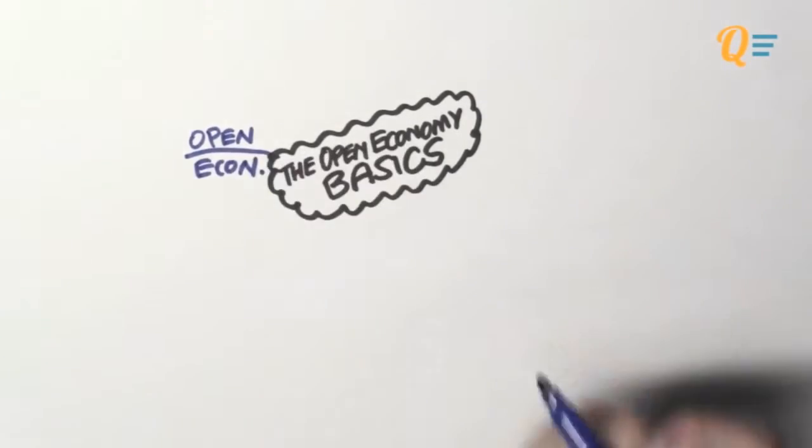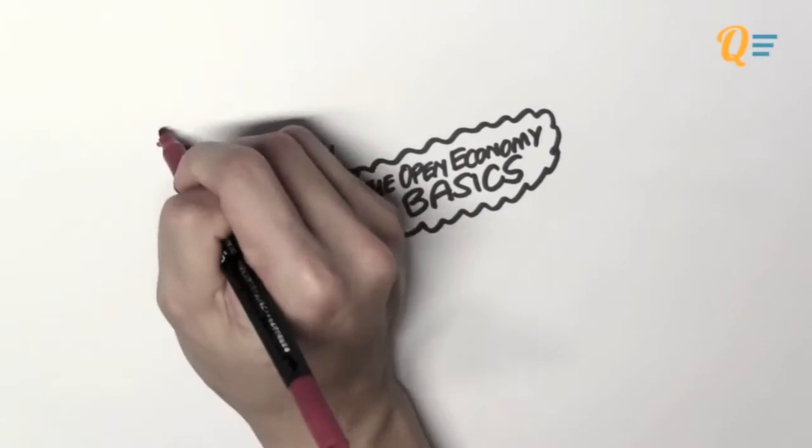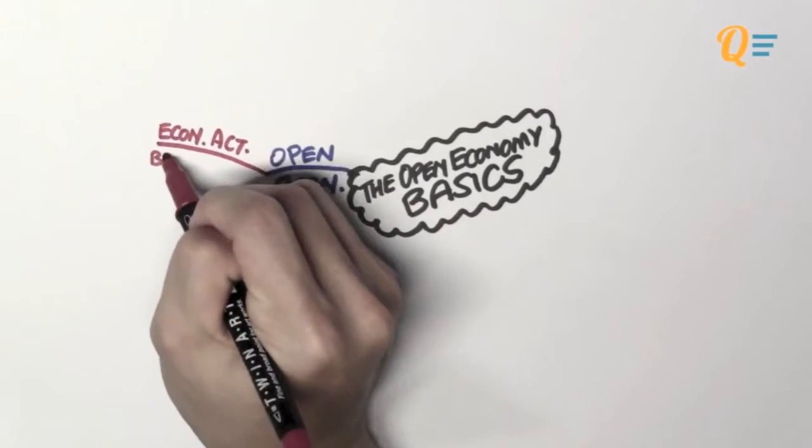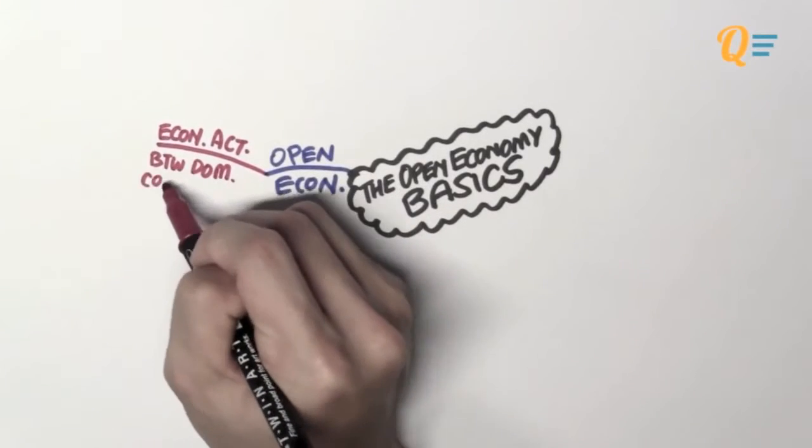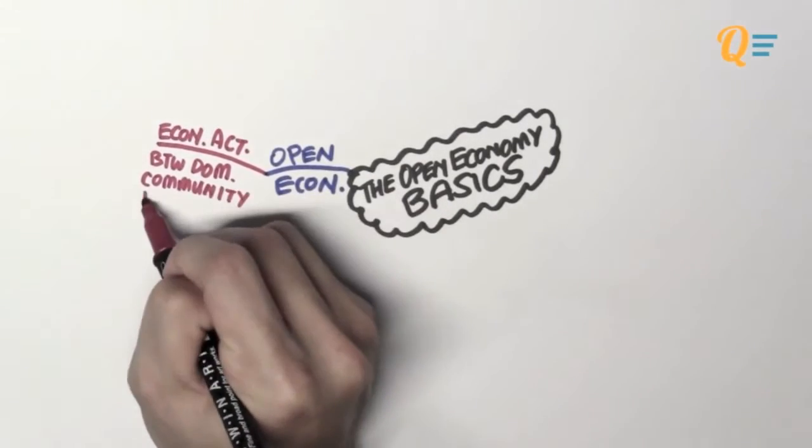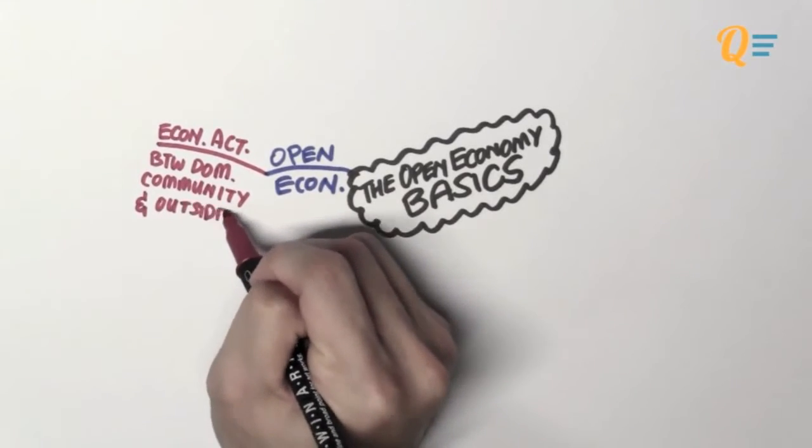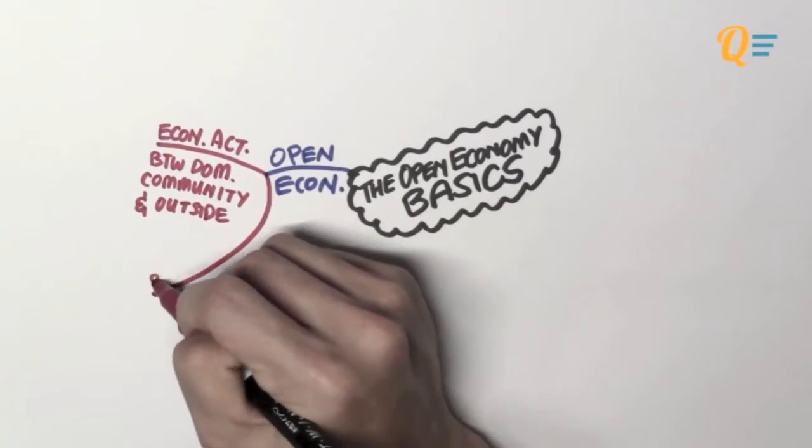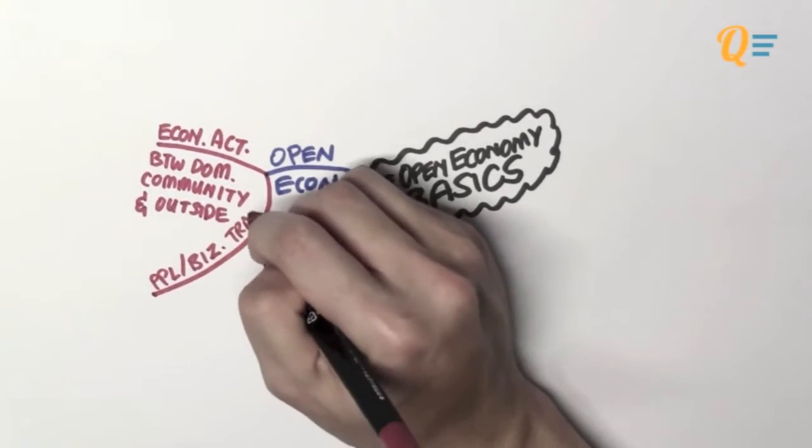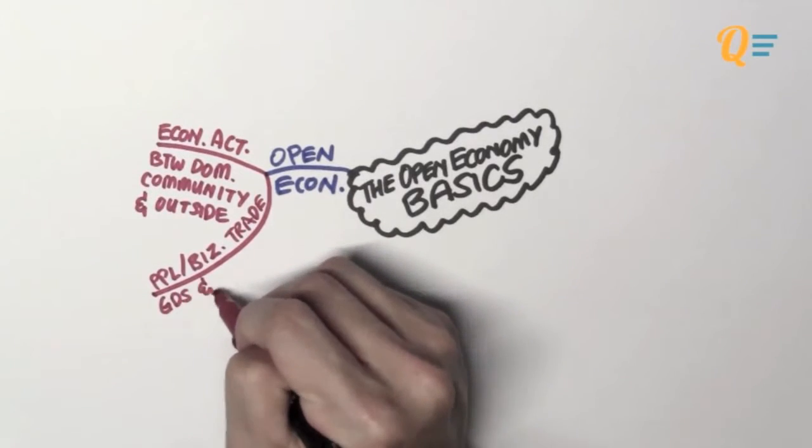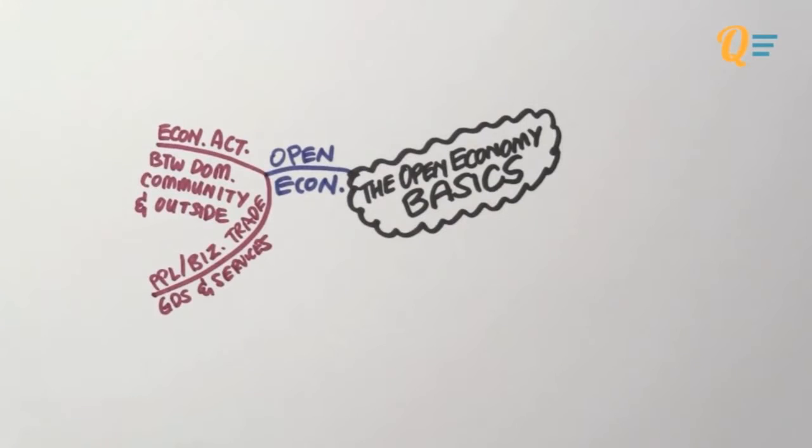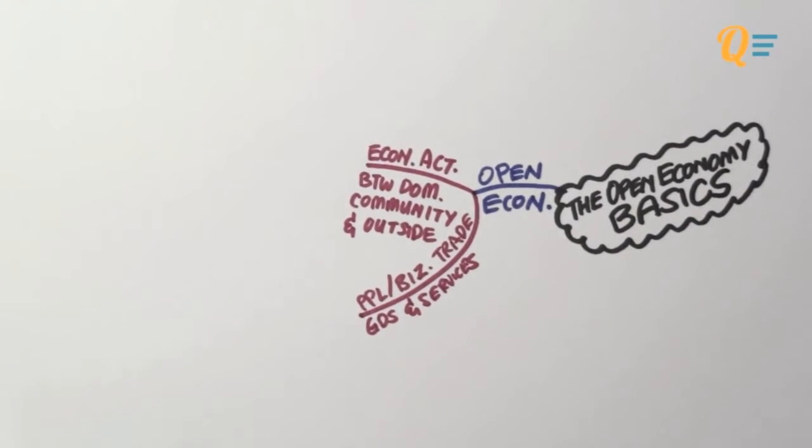So what is an open economy? An economy is known to be open when there is economic activity between a domestic community and an outside community. Before this, we were only talking about one single country. Now we're going to bring in more countries into the picture. And what's happening between these countries is that there are people or businesses that are trading goods and services. So the trading of goods and services is known as economic activities.